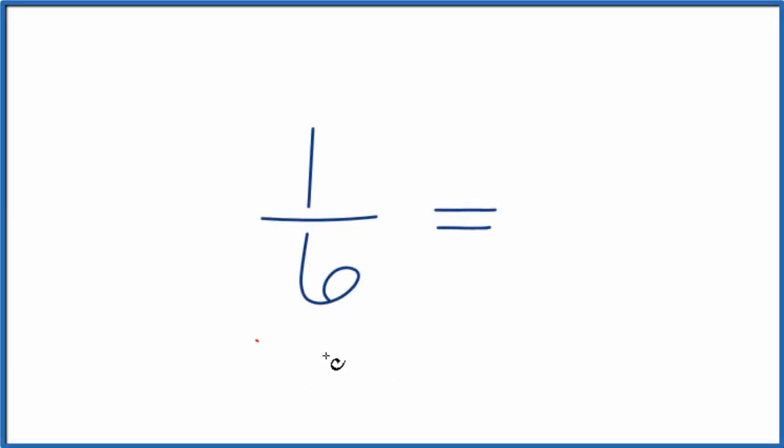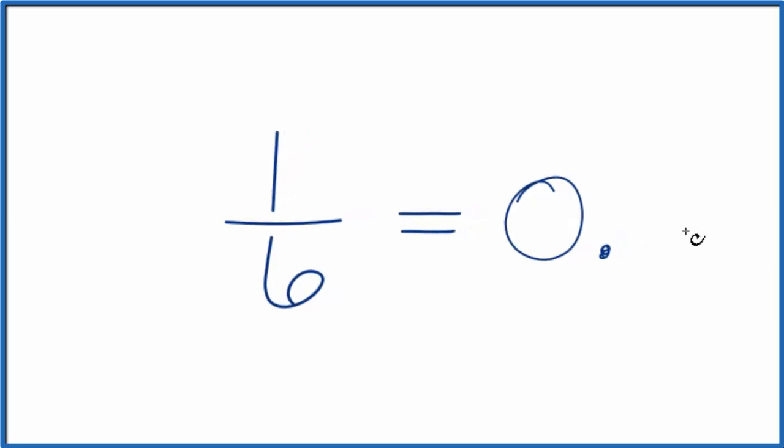If you're asked to convert 1/6, the fraction 1/6, to a decimal, here's how you do it. First off, we know that 1 divided by 6—1's smaller than 6, so we're going to have 0.something as our answer. So that's a good thing to start with.